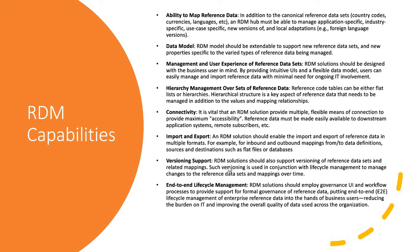Versioning support defines what value or record is active and until what point. Taking the country example, if GB changed to UK, business stakeholders need to know till what point GB was active and from what point UK became the country code for United Kingdom. Finally, end-to-end lifecycle management defines the full governance flow — giving the right roles and permissions to relevant data stewards, defining approval processes so that no mistake in reference data is directly consumed by downstream systems and breaks integration. A level of approval or review can be created for critical reference data elements.